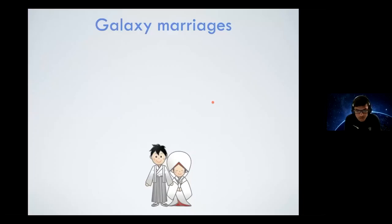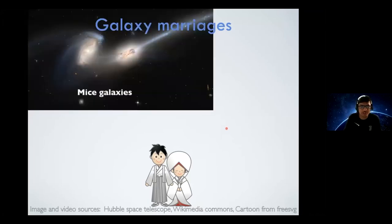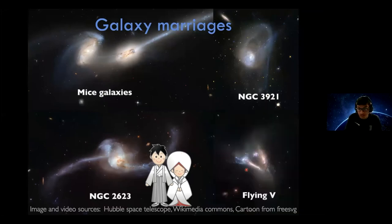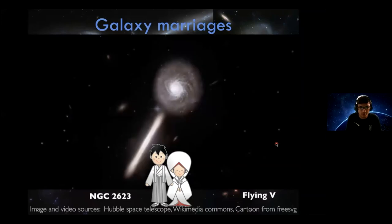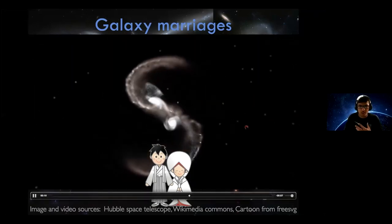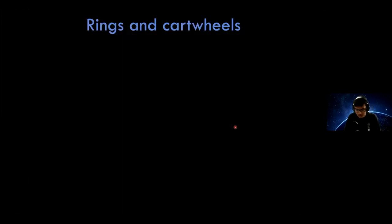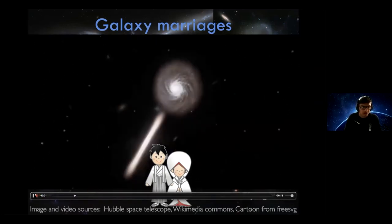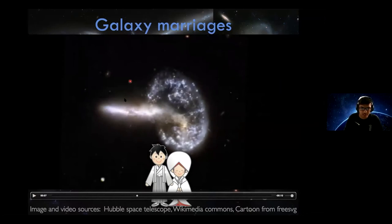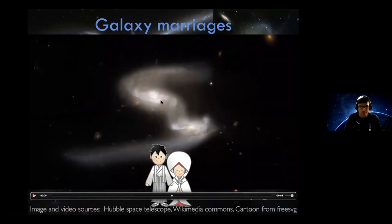Galaxies have some of the prettiest weddings in the universe! Here are the Mice Galaxies, NGC 3921, and a flying V of galaxies — amazing how beautiful galaxy mergers can look. This simulation from 1995 shows two spiral galaxies merging and compares it to real-world observations. At different times you can see different stages of the merging, and if you pause at various points you match them to images we actually see in the sky.